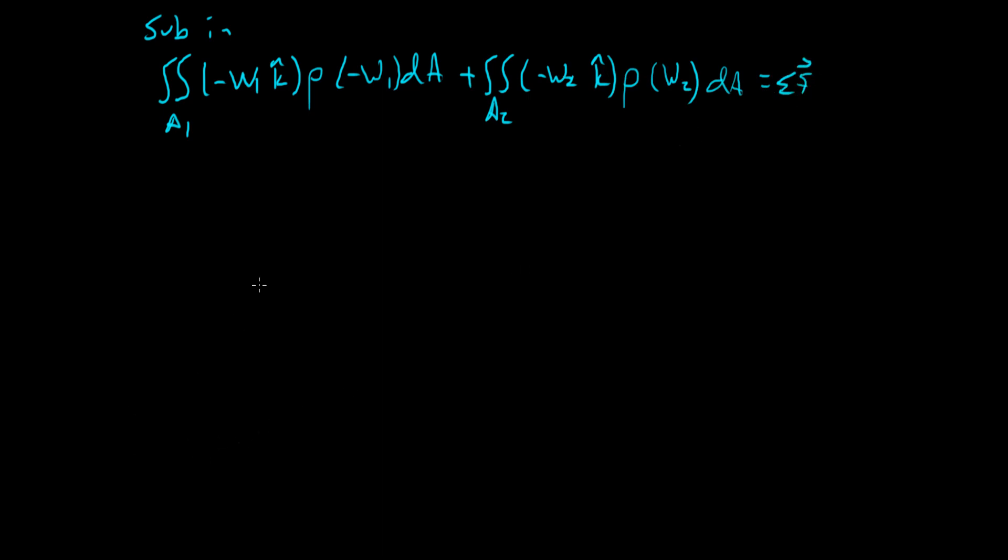Now, we were given in the problem statement that the flows were uniform. In other words, there's no velocity profiles over the area. Uniform. And it is incompressible. And that lets us pull some stuff outside of the integrals. We can pull the W1 rho W1 K hat out. And we're just left with the integral over A1 of D A minus. And we can pull a bunch of stuff out here like W2 rho W2 A2 and that K hat can all come out of the integral.